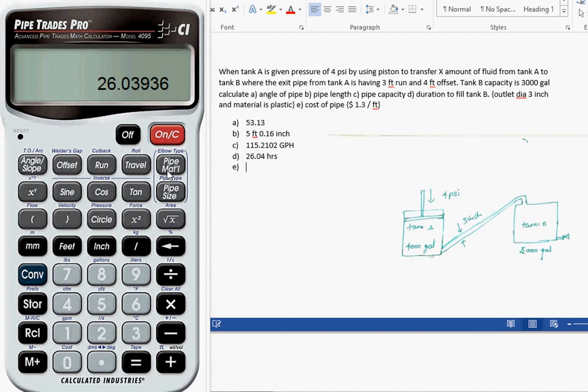Finally, we have to calculate the cost of the pipe. Let me fix the price at $1.30. The cost is fixed. For 5 feet, the total cost is $6.50.